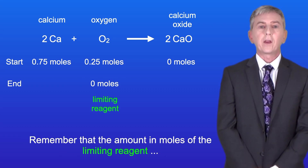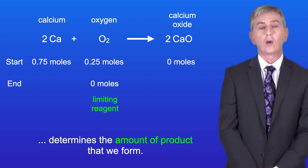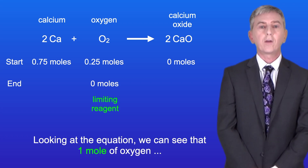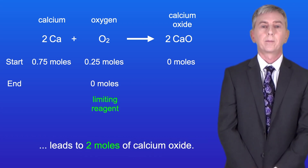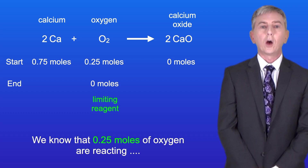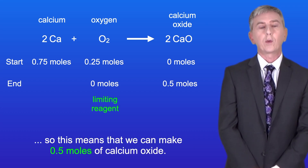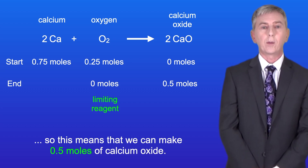Remember that the amount in moles of the limiting reagent determines the amount of product that we form. Looking at the equation we can see that 1 mole of oxygen leads to 2 moles of calcium oxide. We know that 0.25 moles of oxygen are reacting, so this means that we can make 0.5 moles of calcium oxide.